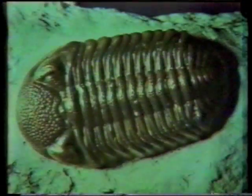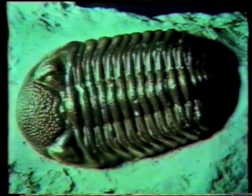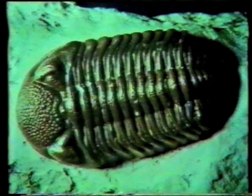As multi-celled animals diversified, soft-bodied creatures were replaced by animals with hard outer skeletons. A revolution in the life forms of the Earth began, and with it the fourth stage of Australia's geological development.